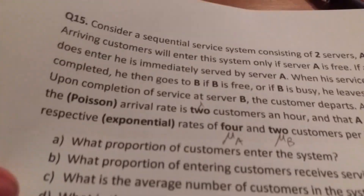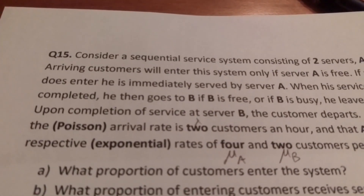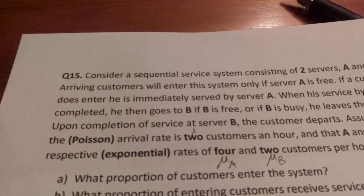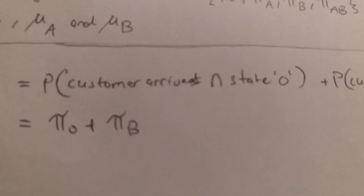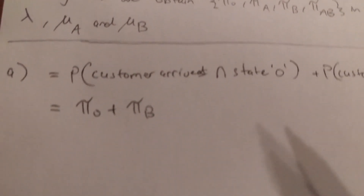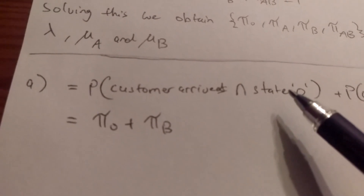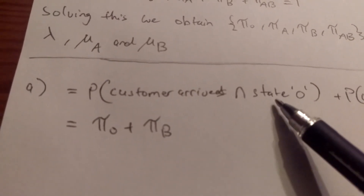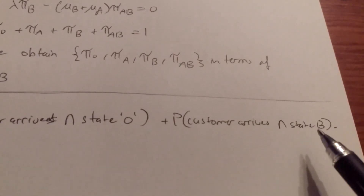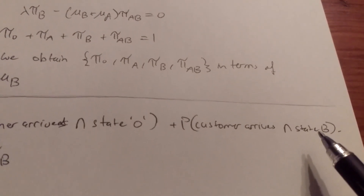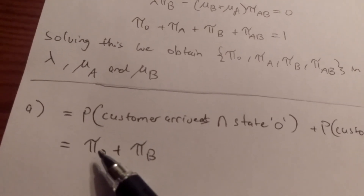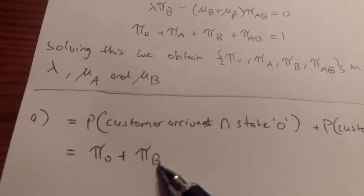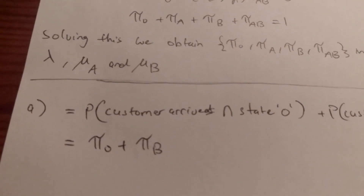For part A, we want the proportion of customers that enter the system — the long-run proportion over an infinite time horizon. A customer enters only if server A is free, which occurs when the system is in state (0,0) or in state (0,1) — that is, only B is occupied. So the answer is π₀ plus π_b: the long-run proportion of time with no one in the system plus the proportion with only someone in B.